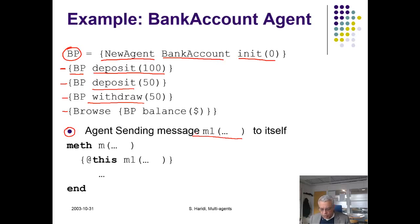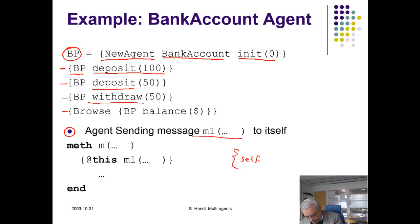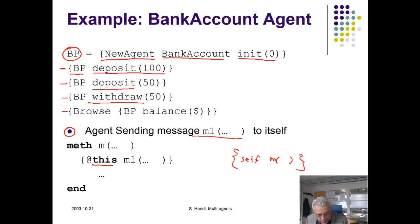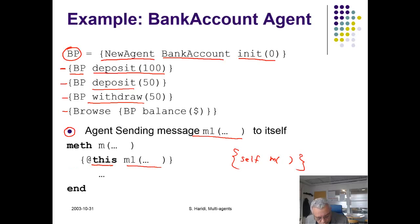One more aspect is how an agent sends a message to itself. We know how an object invokes a method on itself using `self`, but we have a special attribute in our agent called `this`, and sending a message to itself means sending the message to this attribute, which refers to the agent.